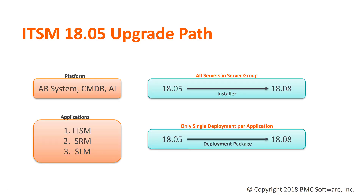To talk about the ITSM 1805 Upgrade Path: this means you are on 1805 for your platform, which includes AR System, CMDB, and Atrium Integrator, and your applications ITSM, SRM, and SLM are on 1805 as well.